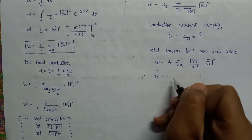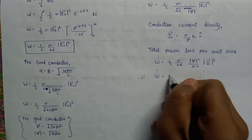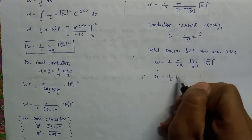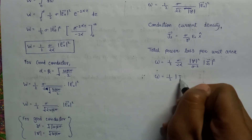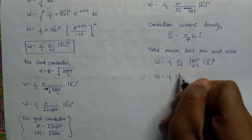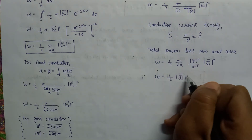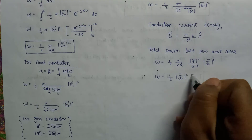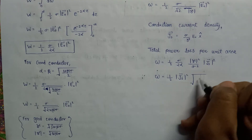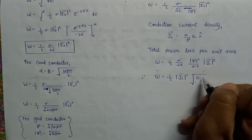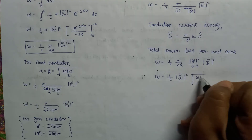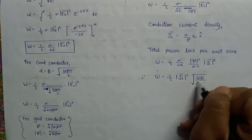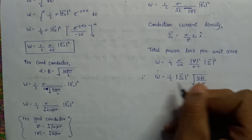This is the expression for the total power loss per unit area, expressed in terms of the surface current density J and the square root of omega mu over 2 sigma.